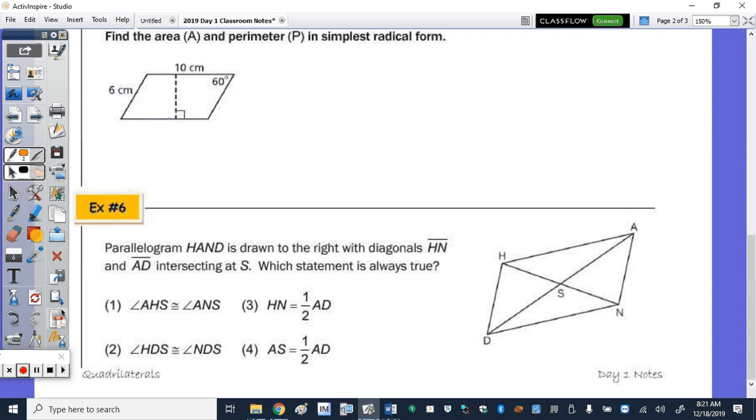AS, so this segment here, is half of AD. Yeah. Because HN bisects it. The diagonals bisect each other. So that means S, right, S is a midpoint on both AD and HN. So yes, the answer is four.